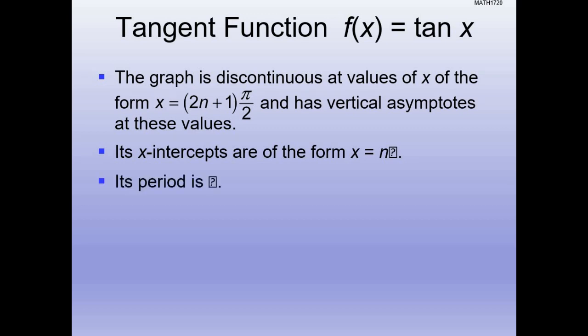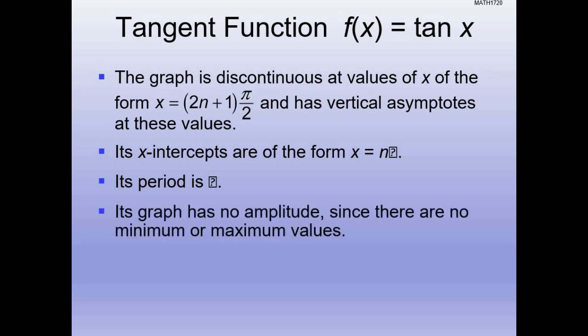The period is pi, whereas with sine and cosine it was 2 pi — they would repeat every one full circle. Tangent can repeat every 180 degrees. We're zero at pi over 2 (90 degrees) or 3 pi over 2 (270 degrees). Since the graph of tangent really has no amplitude, you can put a number in front like we did with sine or cosine, but it just expands it — it either makes the graph get wider or steeper faster.